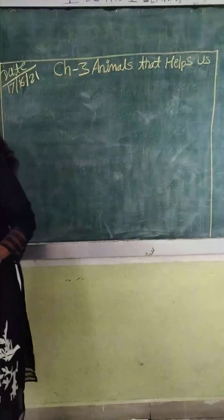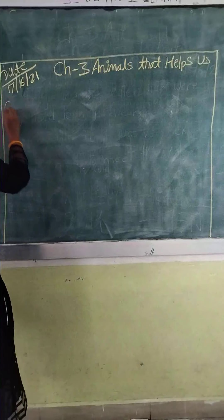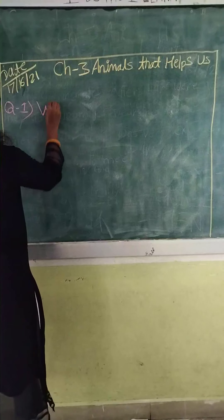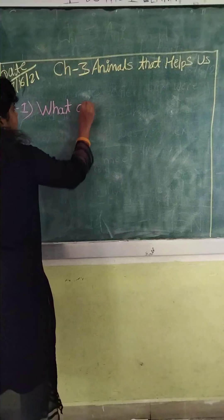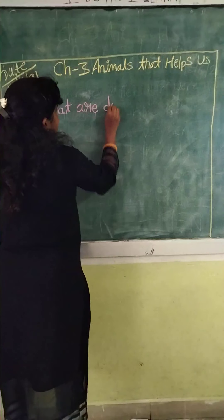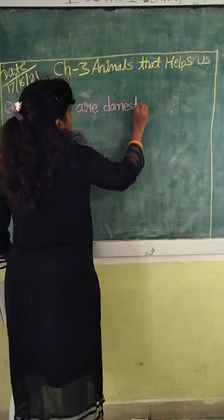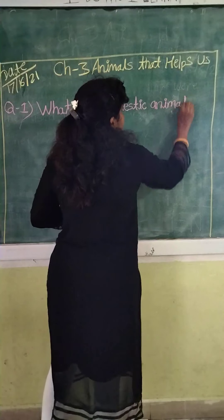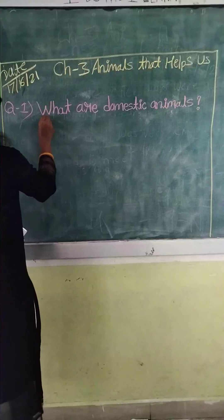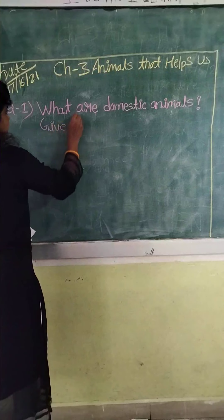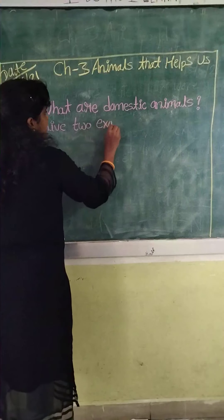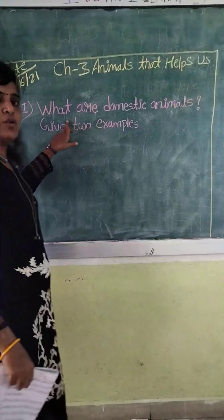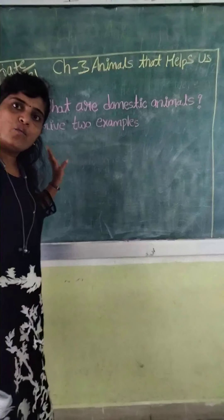Chapter 3, Question 1: What are domestic animals? And give two examples. I have written the question in pink chalk and I will write the answer in white chalk.